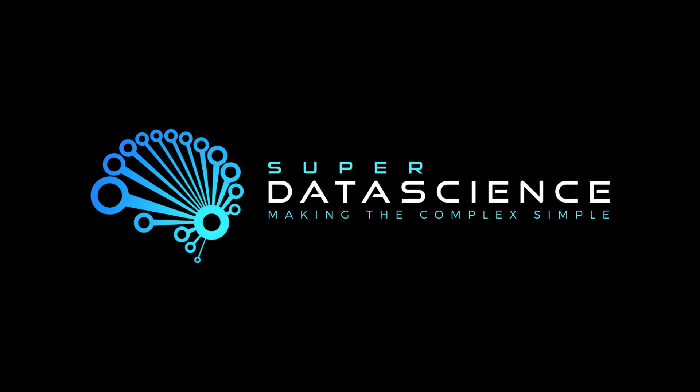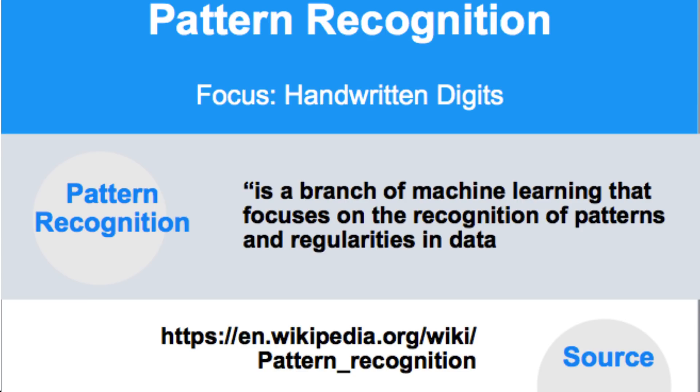Before we get started, we need to take a look at what pattern recognition really is. Pattern recognition is a branch of machine learning that focuses on the recognition of patterns and regularities in data. It may sound simple, but pattern recognition is highly applicable.